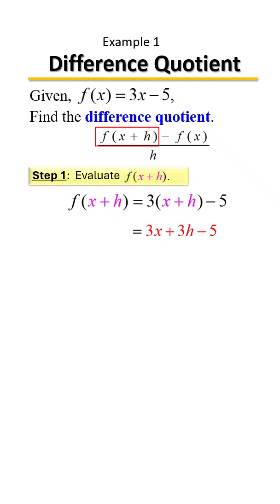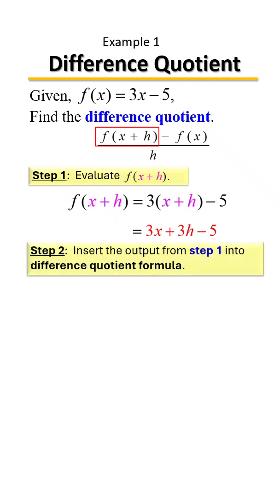Now that we've simplified that expression, we're going to plug everything into our difference quotient formula. Again, here it is, first find f(x+h) minus the function we're given, all over h.